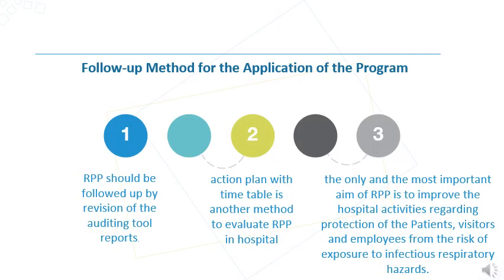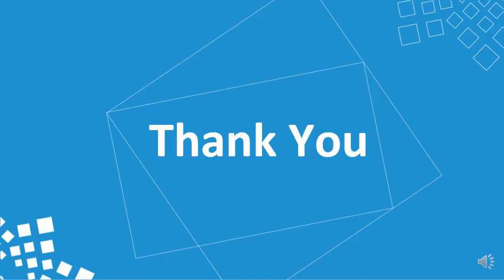As a follow-up method for the application of the program, the Respiratory Protection Program should be followed through revision of auditing tool reports and KPIs. An action plan with a timetable is another method to evaluate performance. The most important aim of the program is to improve hospital activities regarding protection of patients, visitors, and employees from exposure to infectious respiratory hazards. The appropriate and effective implementation of the program is to improve the safety of our patients, healthcare workers, and visitors. Thank you for listening, and we are available for any inquiries at any time.